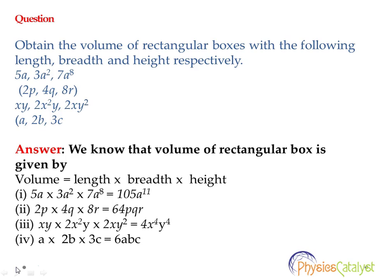Now the second problem: 2p into 4q into 8r. Again, segregating the numeric terms — the numeric terms are 2, 4, 8 — so the multiplication would be 64. Now the variable terms are p, q, r. So the answer will be 64pqr.